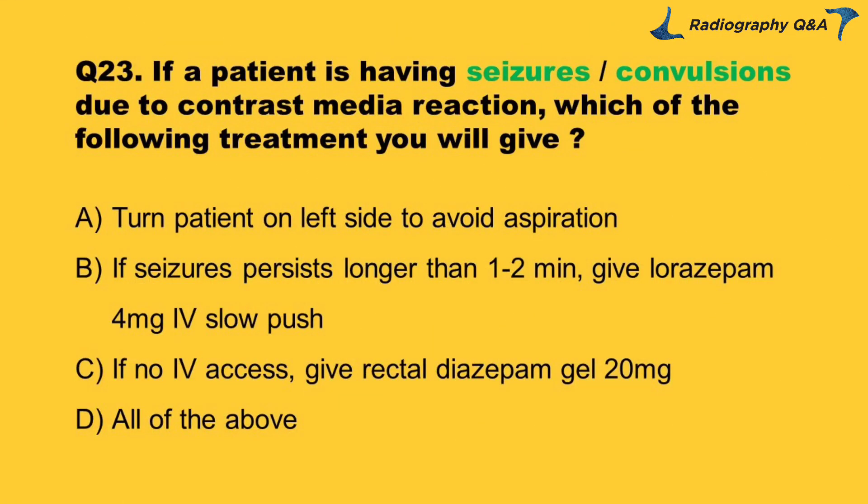Question 23: If a patient is having seizures or convulsions due to contrast media reaction, which of the following treatments will you give? Option A: turn patient on left side to avoid aspiration. Option B: if seizures persist longer than 1–2 minutes, give lorazepam 4 mg IV slow push. Option C: if no IV access, give rectal diazepam gel 20 mg. Option D: all of the above. Right answer is Option D.